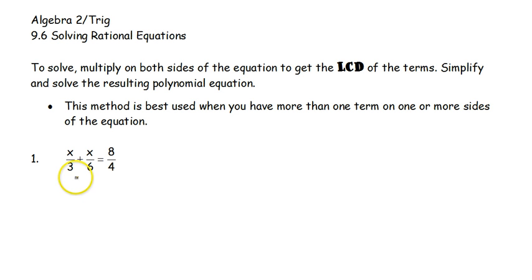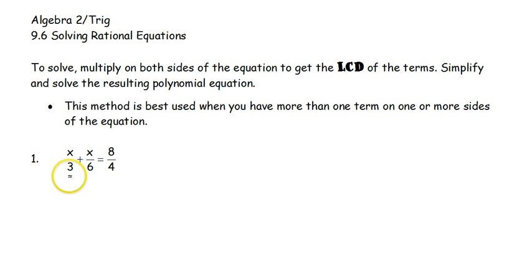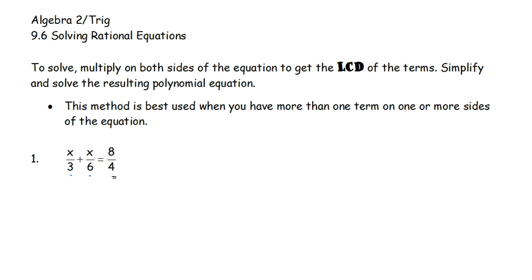Here we have two terms on the left-hand side, so I'm going to use the LCD method. I want to find the least common denominator — not just of two pieces, but of all three. For example, if my numbers are 3, 6, and 4, the least common multiple between all three numbers is 12.